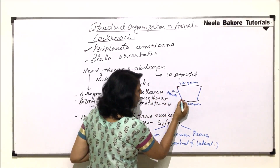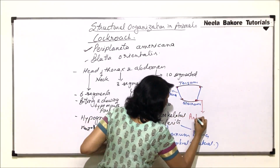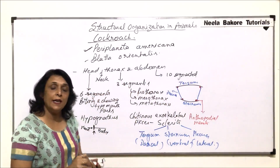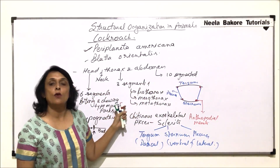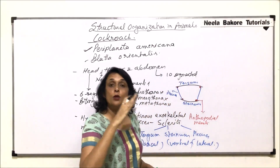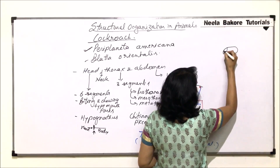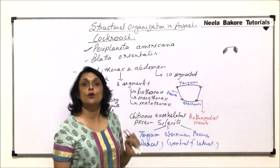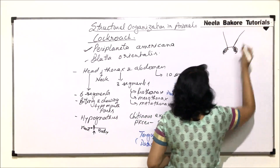There are delicate membranes which hold these sclerite pieces together, and these membranes are known as arthropodial membranes. Now, if we see the cockroach from the dorsal side, what is visible is the head. In the head we find two large compound eyes, and there are two long antennae which are sensory structures.